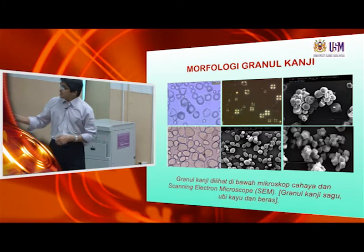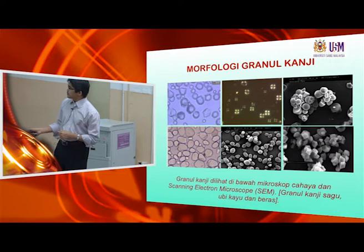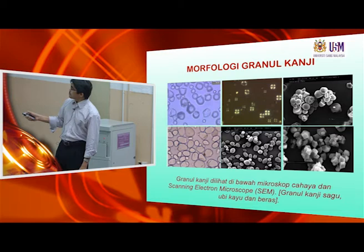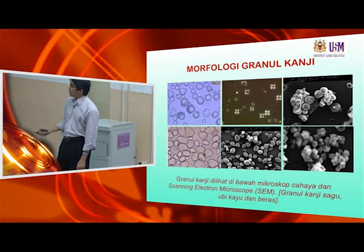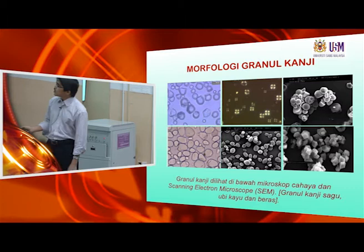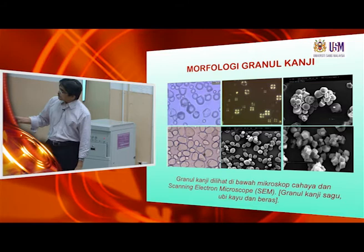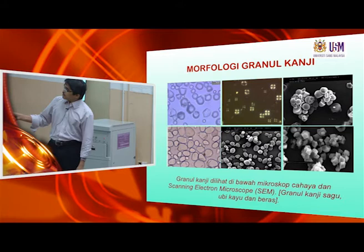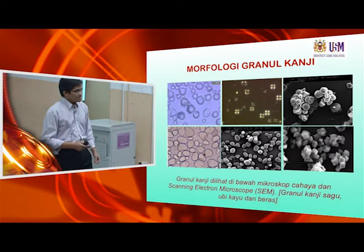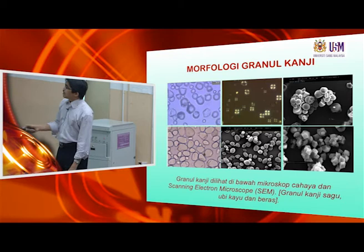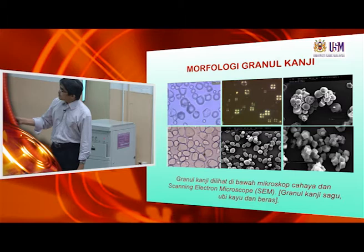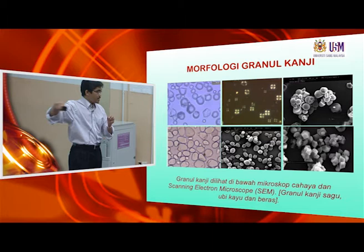We can see from these pictures: this one is sago and this one is tapioca, this one is rice. In the sago granules we have round ones and also granules where one end is cut off — this type of granule is called truncated. So we have very small granules and bigger granules — they have a distribution of granule sizes.